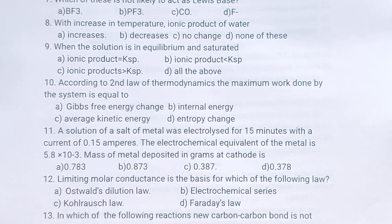a solution of a salt of metal was electrolyzed for 15 minutes with a current of 0.15 amperes. The electrochemical equivalent of the metal is 5.8 into 10 power minus 3. Mass of the metal deposited in grams at cathode is?